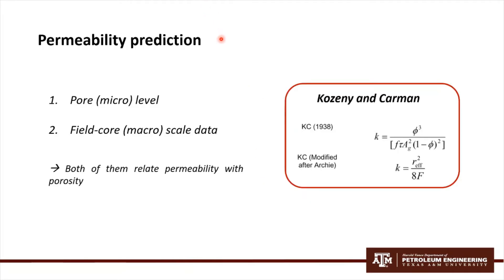Permeability prediction can be classified by pore micro level properties and field core or macro scale data, where both of these techniques relate the permeability primarily to porosity. Also, one of the most important correlations is the Kozeny-Karman relationship that you can observe here. This is the modified after Archie.